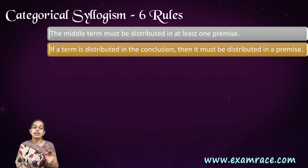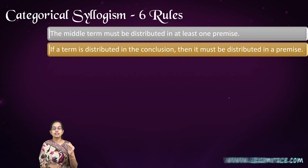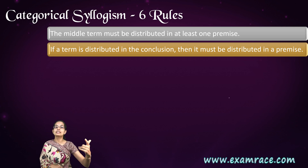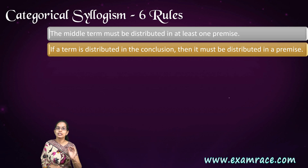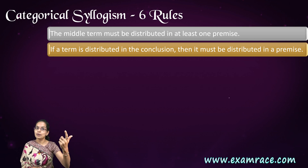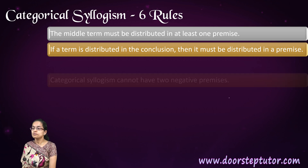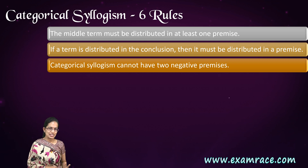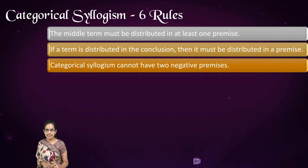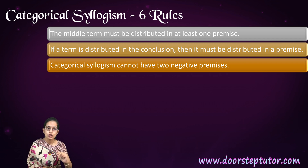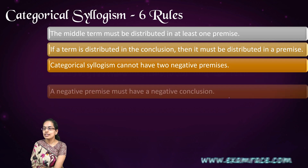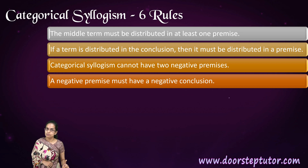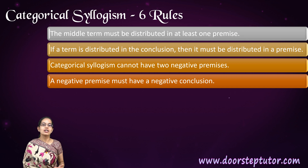The second rule is: if a term is distributed in the conclusion, then it was automatically distributed in the premise. Since the conclusion is derived from the premise, if it is fully occupied in the conclusion, it was distributed in the premise as well. The third rule is: a categorical syllogism cannot have two negative premises — both premises cannot be negative. I cannot have both premises starting with 'no' and call it a valid form.